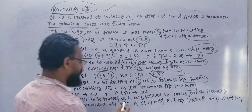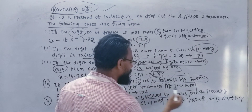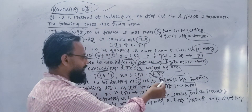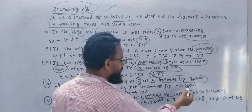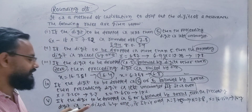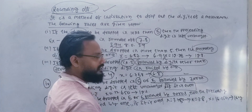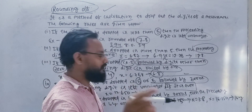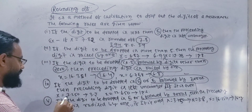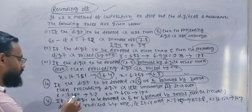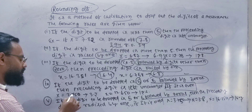If the digit to be dropped is 5, or 5 followed by zeros, and the preceding digit is odd, then the preceding digit is raised by 1. For example, x equals 3.250 — the digit to be dropped is 5 followed by 0, so we apply the even-odd rule to the preceding digit.